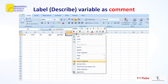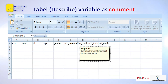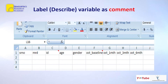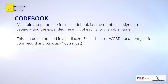You need to label each and every variable. To label a variable in Excel, right-click on the cell of interest, scroll down, and select 'Insert Comment'. A blank box opens up and you can write, for example, 'OCT at baseline was central subfoveal thickness at baseline in microns.' Once labeled, a small red dot appears at the top-right corner of the box indicating a comment is attached. Always maintain a separate code book — a separate file listing the numbers assigned to each category and the expanded meaning of each short variable name.